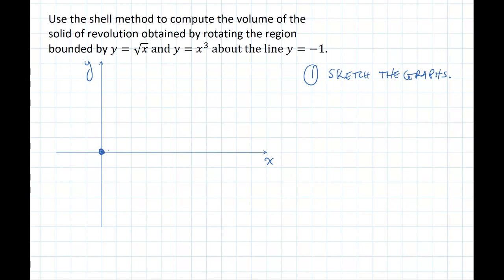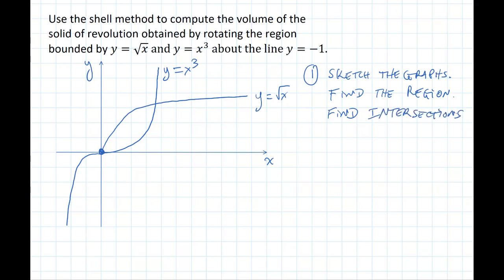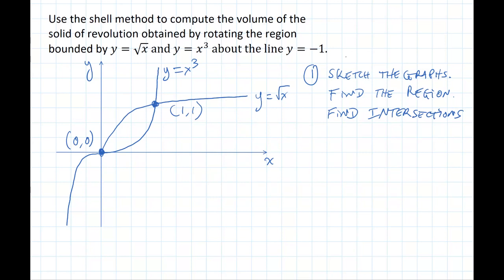y equals square root of x starts here and goes like a sideways parabola like this. y equals x cubed looks like this. I'm just going to draw this figure in here — they make this region. I'll also need to find the intersections. For these two equations, the intersections are here at (0, 0) and (1, 1). The next thing I need is the line y equals negative 1, which is down here — and this is the axis. That's step 1.